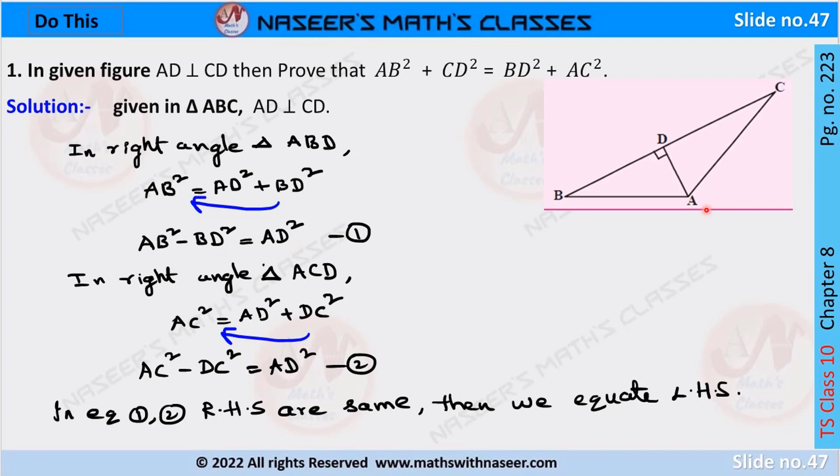Next, the second right-angle triangle is ACD. Here also, by applying the Pythagoras theorem, we can write hypotenuse square AC square is equal to sum of other two sides AD square plus DC square. By transposing DC square from RHS to LHS, it can be written as AC square minus DC square is equal to AD square. Let this be the second equation.